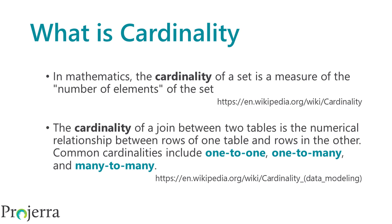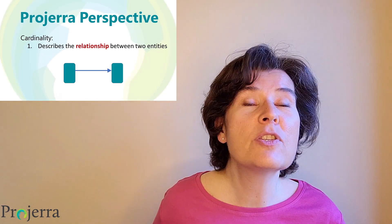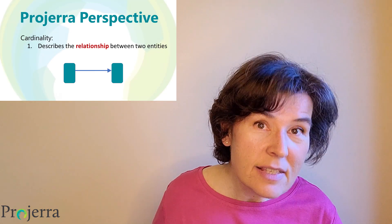Wikipedia provides two definitions for cardinality. In mathematics, the cardinality of a set is measured by the number of elements of that set. The cardinality of a join between two tables is the numerical relationship between rows of one table and another. Common cardinalities include one-to-one, one-to-many, and many-to-many. These definitions are not presented in business speak, so I'll translate them for you. Cardinality describes the relationships between two entities, and the key point is that these relationships need to be described in both directions.